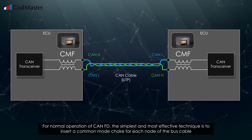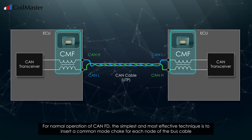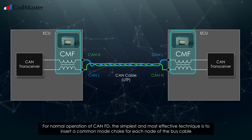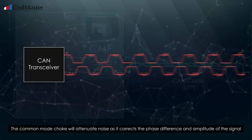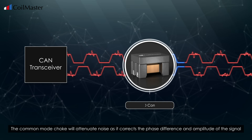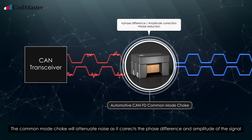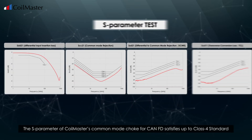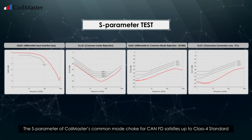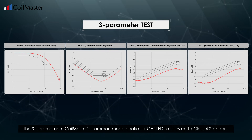For normal operation of CAN FD, the simplest and most effective technique is to insert a common mode choke at each node of the bus cable. The common mode choke attenuates noise by correcting the phase difference and amplitude of the signal. The S-parameter of Coil Master's common mode choke for CAN FD satisfies up to Class 4 standard.